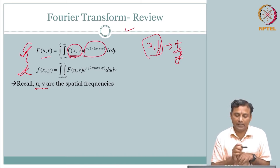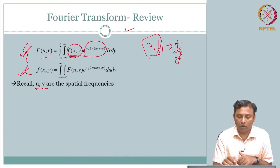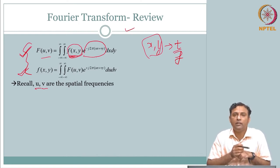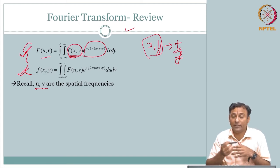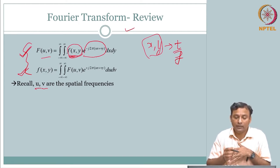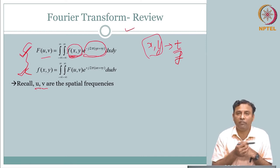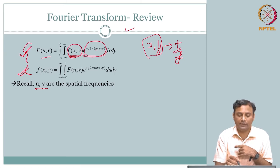Instead of that, now you are breaking or decomposing f(x, y) into complex exponentials — that is what is happening here. What is this complex exponential? e^(jρ) — when we covered important signals, we covered complex exponentials and wrote them in terms of sine and cosine. Essentially, you can see this as sine and cosine with some spatial frequency u and v. You are decomposing f(x, y) to see how much frequency content is present.